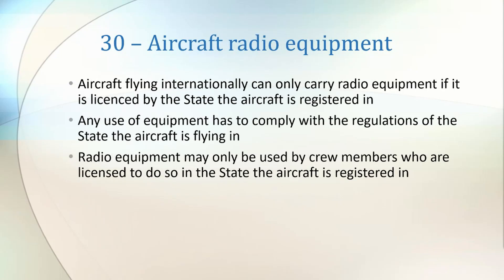Article 30 covers aircraft radio equipment. Any aircraft flying internationally may only carry radio equipment that is licensed by the state that the aircraft is registered in. While flying internationally, the equipment has to comply with the regulations of the state being flown in, and radio equipment may only be operated by licensed crew members. The license for those crew members has to be from the same state that the aircraft itself is registered in.